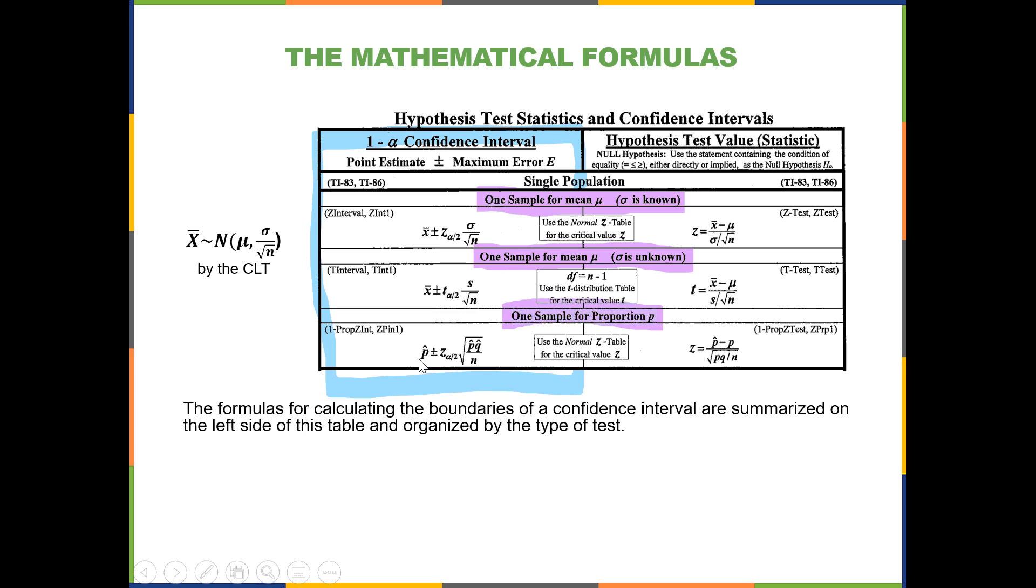That will be used as the starting point, then adding and subtracting the margin of error, which involves always z-scores. So the only time you'll use a t-score is if you're doing a mean when you don't know the true population standard deviation.